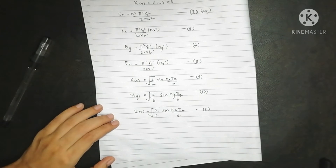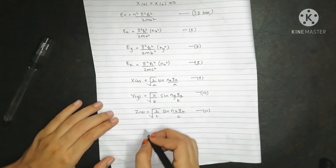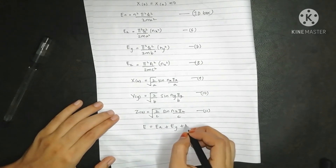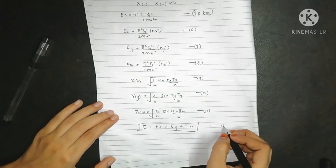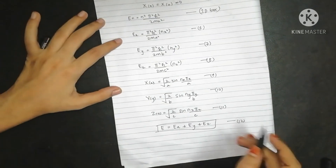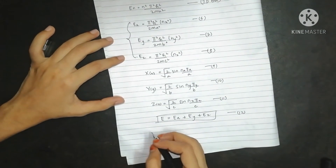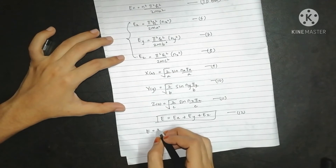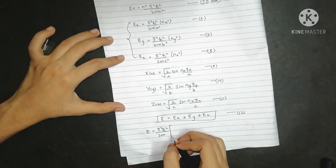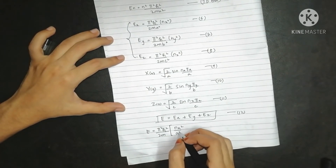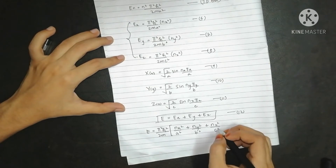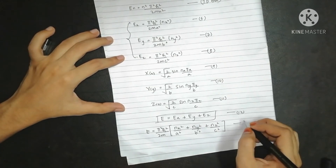The total kinetic energy of the particle is the sum of the energies along all directions: E = Ex + Ey + Ez (equation 12). Summing the energy expressions gives: E = (π²h-bar²/2m)·[nx²/a² + ny²/b² + nz²/c²], which is equation 13.